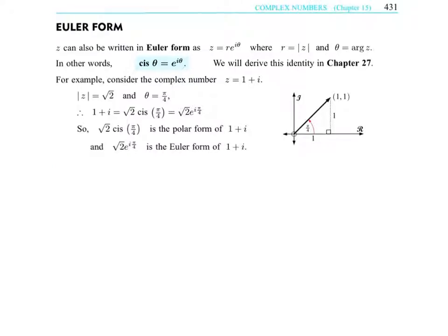There's a third way of writing a complex number, and that's known as Euler's form. And they point out to you here that we derive this identity in chapter 27, so I'm not going to really go into why this is true. But what happens is we can take our complex number and write it as r times e to the i theta.